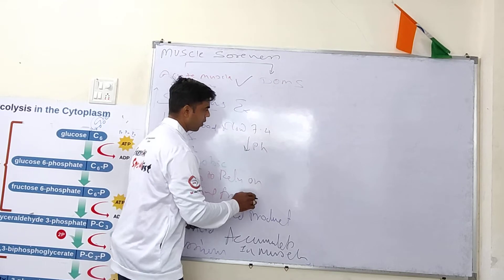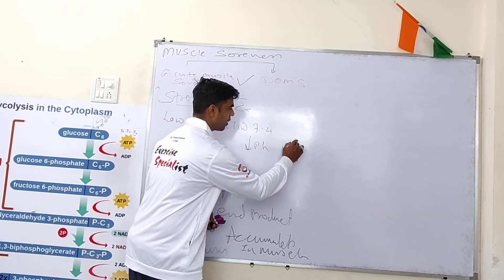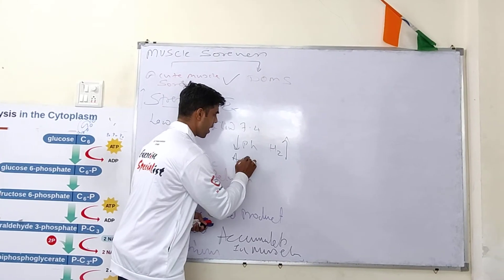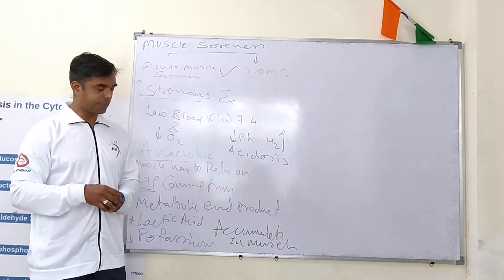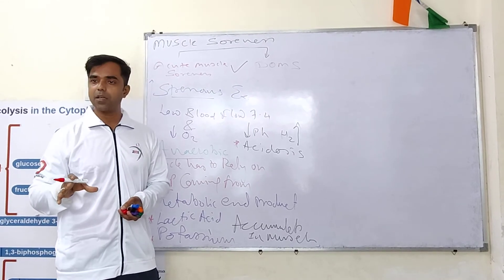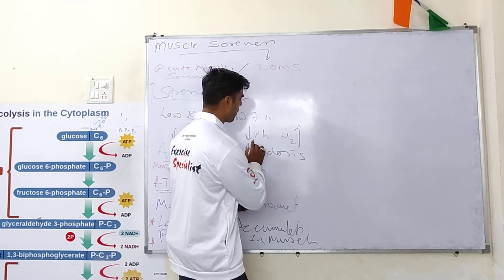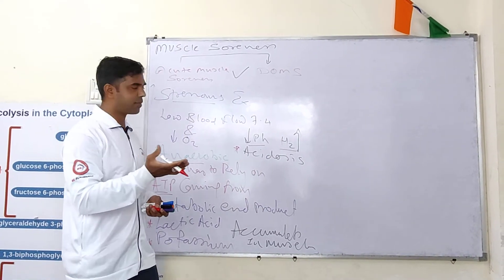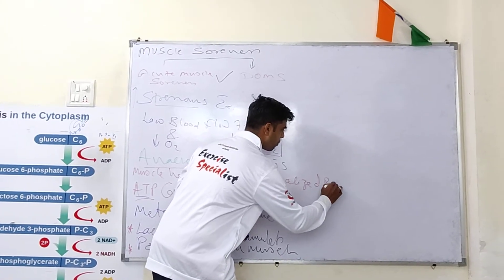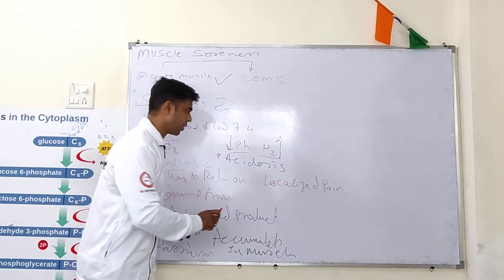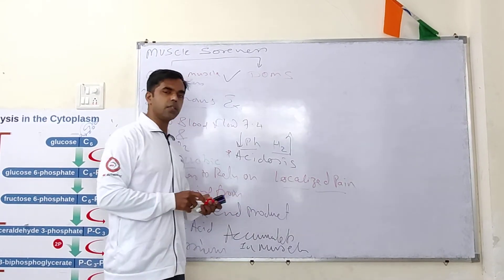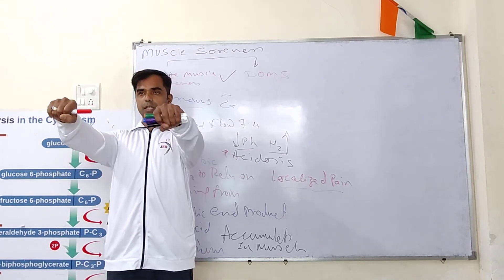These waste products increase the acidic environment, due to which your pH is dropped from 7.4, and hydrogen ions are increased. That results in acidosis. Your client or patient may get localized pain or burning sensation. Once your pH is decreased and hydrogen ions increase, your client may experience localized pain or burning sensation immediately after a bout of exercise.